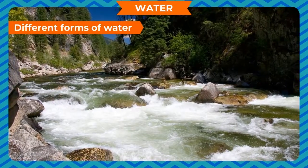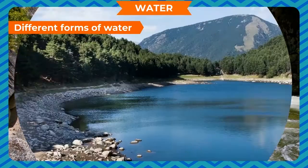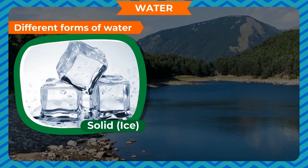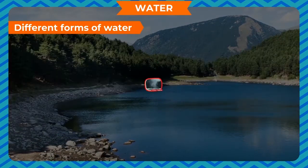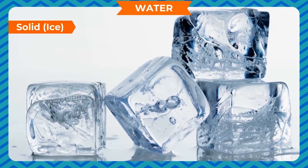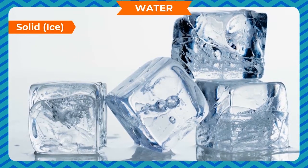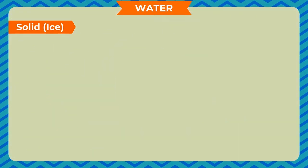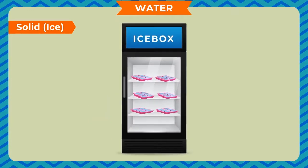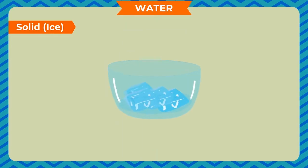Different forms of water. Water is found in three states in nature: solid ice, liquid water, and gas water vapor. Ice is the solid form of water. It has a fixed shape. When we put some water in the freezer of our refrigerator, after some time it changes into ice. When ice melts, it again changes into liquid water.